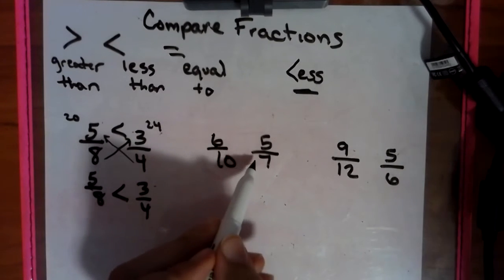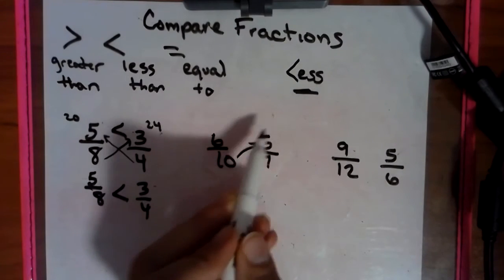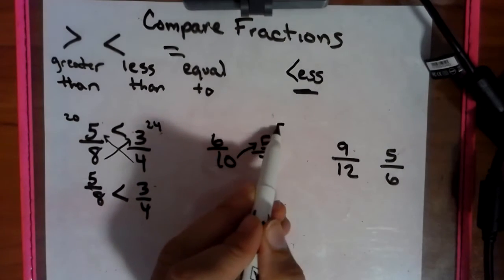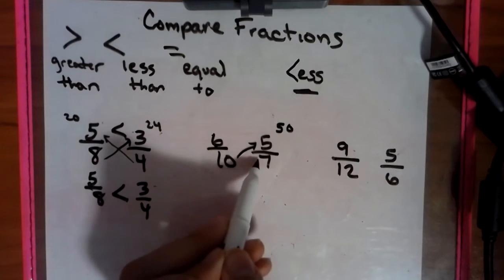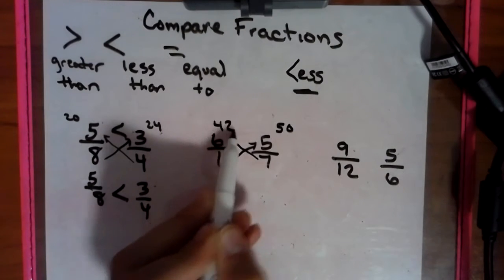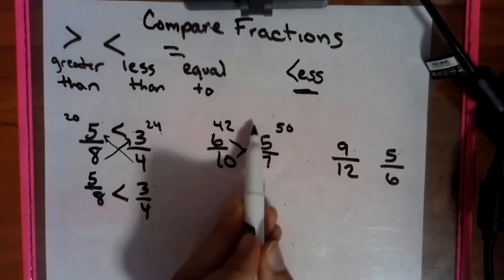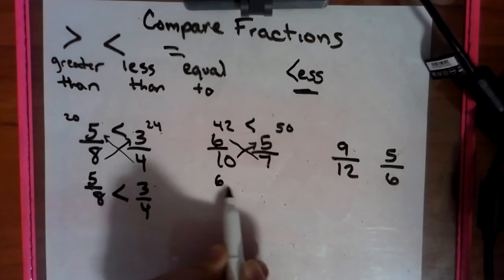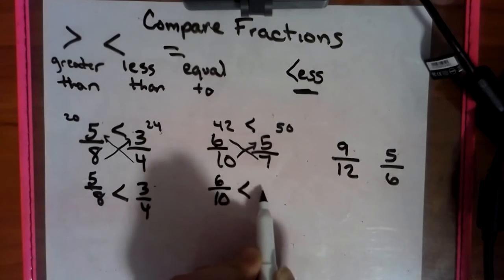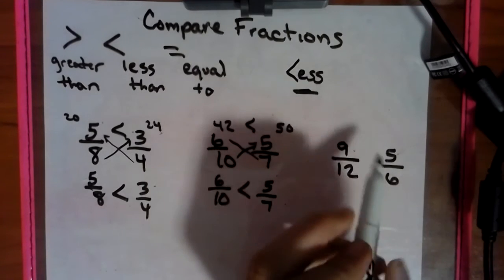We look here, we do the same thing. We go 10 times 5 is 50, 7 times 6 is 42. Who is bigger? It's the 50, so we say 6/10 is less than 5/7.